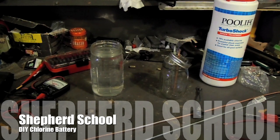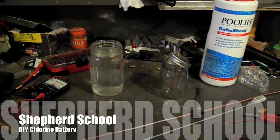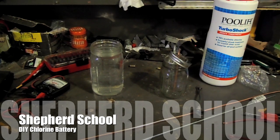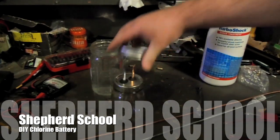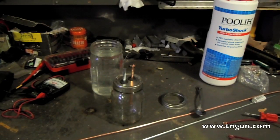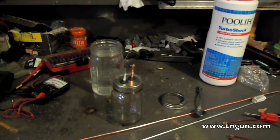Hey this is David from the Shepherd School and today what we're gonna do is make a chlorine battery out of aluminum and copper and some bleach. Basically this is just simple electrochemistry and I'm not gonna get into too many details because I'm gonna save that for the article on the website.